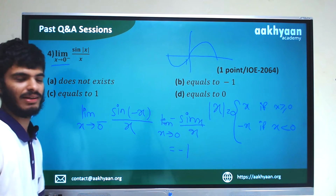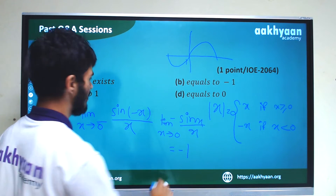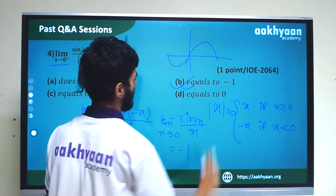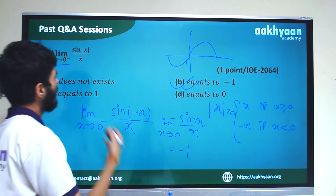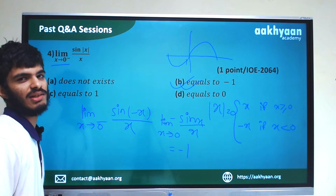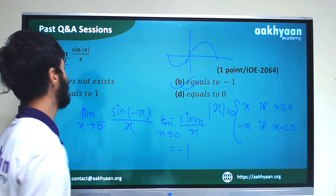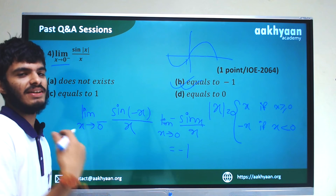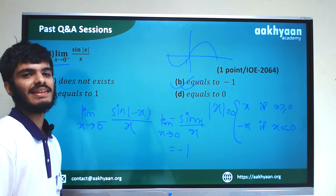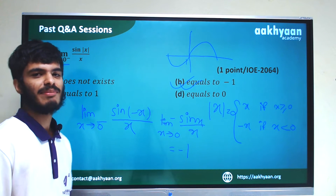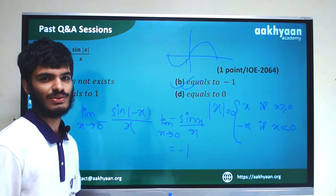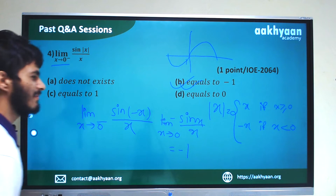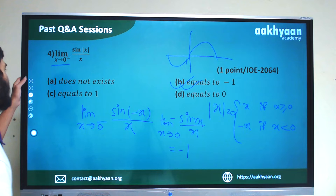For the right-hand limit: limit x tends to 0 plus, x is greater than 0 so |x| equals x, giving limit x tends to 0 of x/x. For the left-hand limit: x is less than 0, so we use minus x. Left hand limit is less than 0.